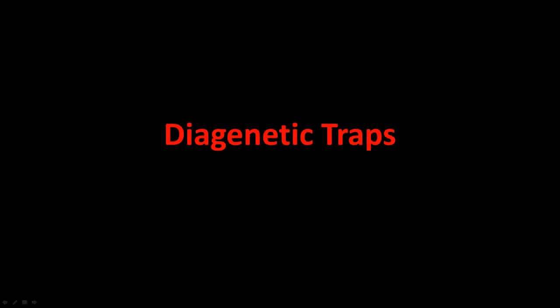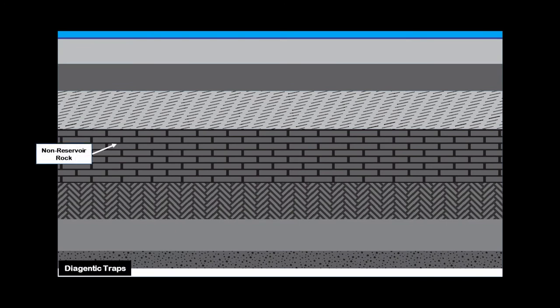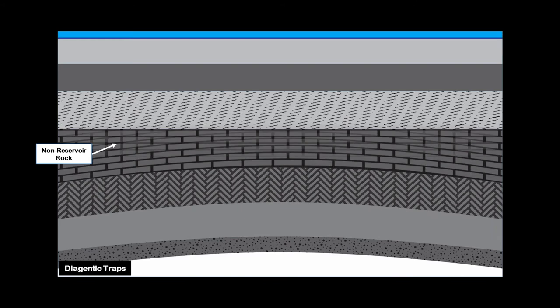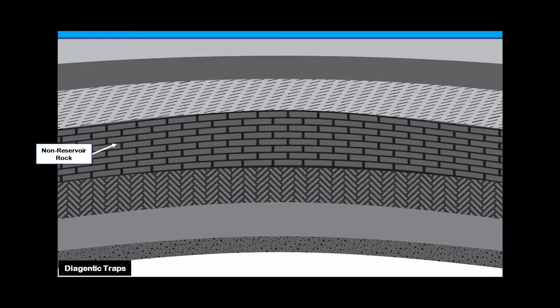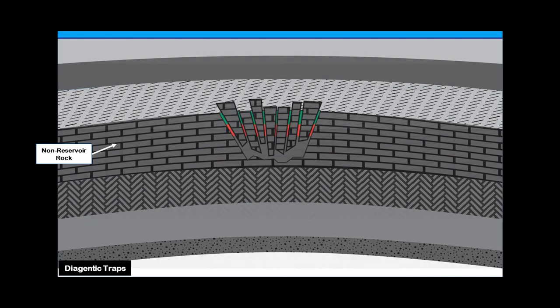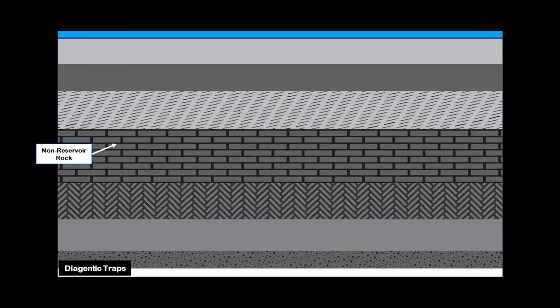Finally, we'll have a quick look at diagenetic traps. Diagenetic traps form in brittle rocks that would not normally become reservoir rocks. In this case, folding occurs in an area with a limestone. Fracturing causes secondary porosity, where leaching of the non-reservoir rock can allow hydrocarbons to accumulate. Diagenetic traps can also occur as a result of porosity through dissolution of a non-reservoir quality rock.